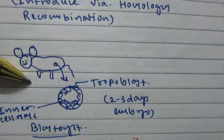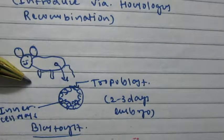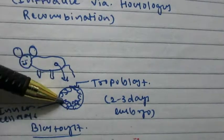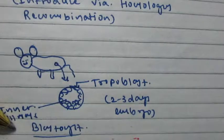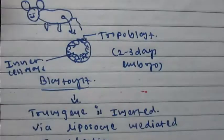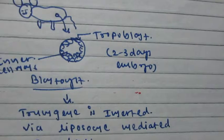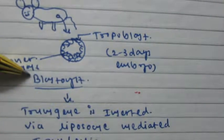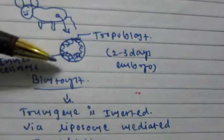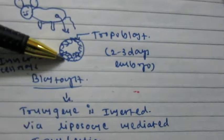In the early stage, an embryo from a pregnant mouse is taken at 2 to 3 days, which is known as the blastocyst stage. The blastocyst contains an outer trophoblast and an inner cell mass layer. The inner cell mass contains embryonic stem cells, which can give rise to any cell type. At this stage, the transgene is inserted by a particular method.